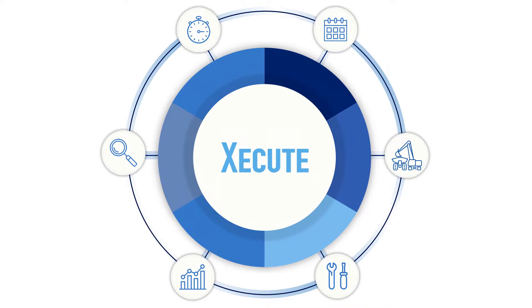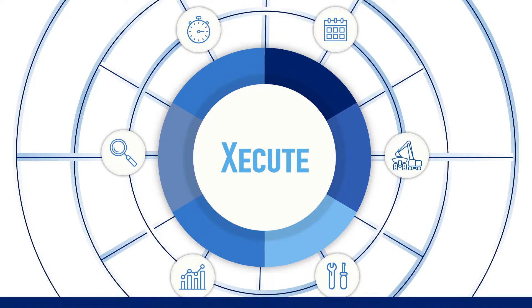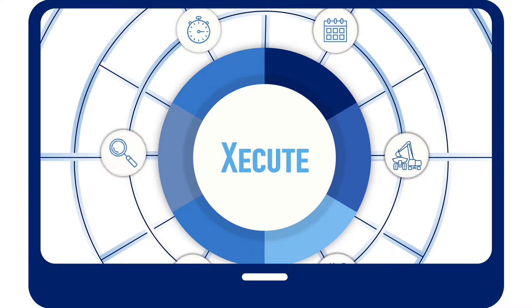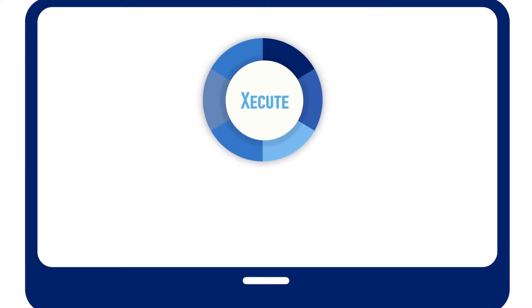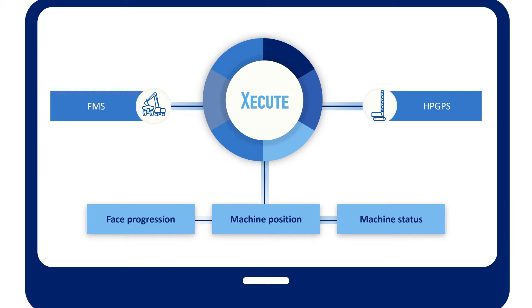With Execute, many departments across the operation provide input to the short-term plan, so planners know exactly what is happening at any given time. For operations, the fleet management and high-precision GPS systems provide a live feed of face progression as well as machine position and status.